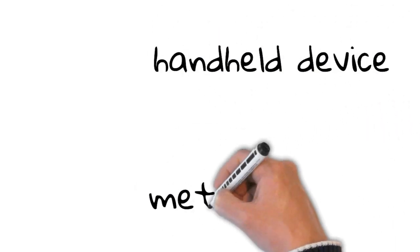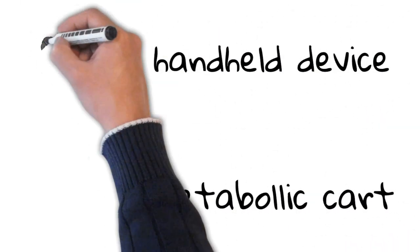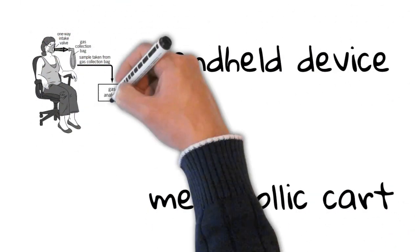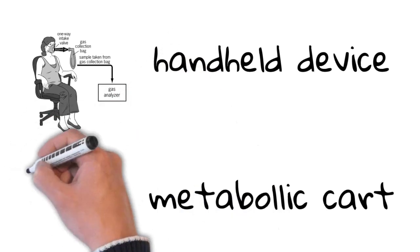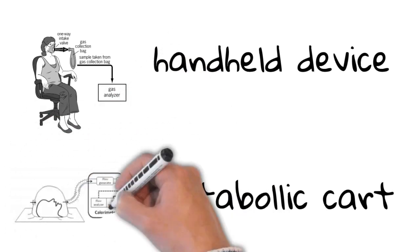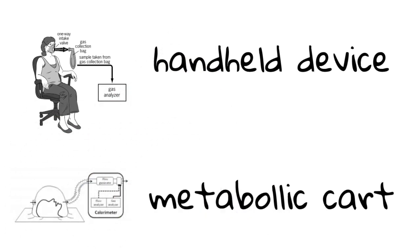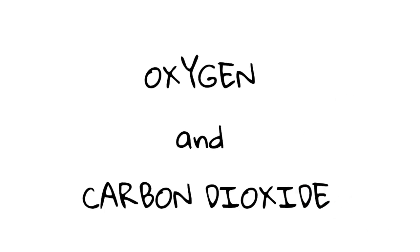Indirect calorimetry can be performed in various ways, such as using a handheld device or a specialized machine called a metabolic cart. The equipment typically measures the concentration of oxygen and carbon dioxide in the air an individual breathes in and out, and uses this information to calculate their energy expenditure.